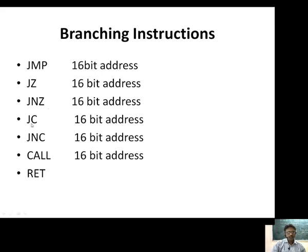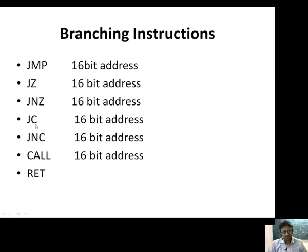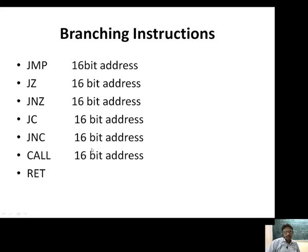The fourth instruction is Jump on Carry (JC). If the carry flag is set, then only it will jump to the address defined within the instruction; if the carry flag is not set, it will execute the next instruction. The next is Jump on No Carry (JNC) — if the carry flag is not set, only then it will jump to the 16-bit address; otherwise it will execute the next instruction.